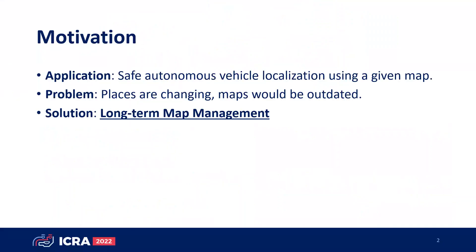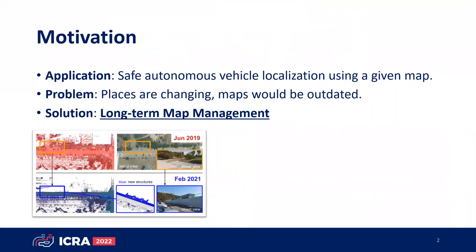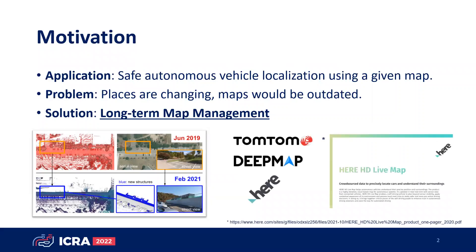The problem is that places are changing with time, so existing maps will become outdated, and this could cause catastrophic false localization of a robot. Long-term map management is a mandatory and very important work for safe localization, and many companies such as TomTom, DeepMap, HERE, etc. are working on this important research topic.